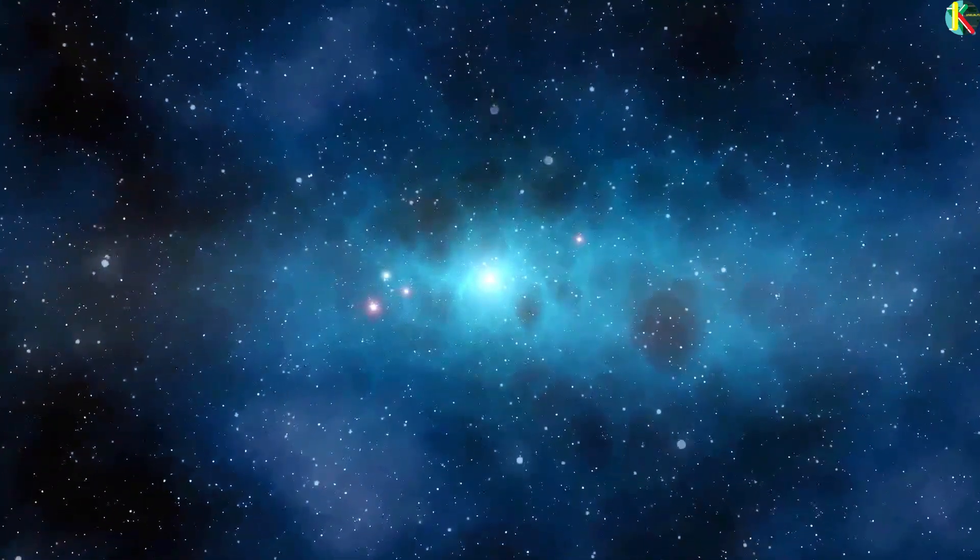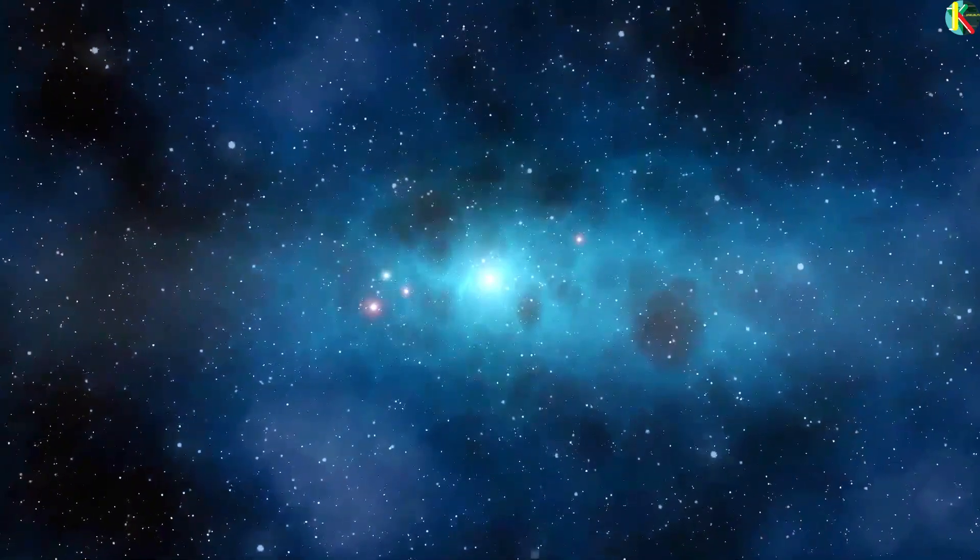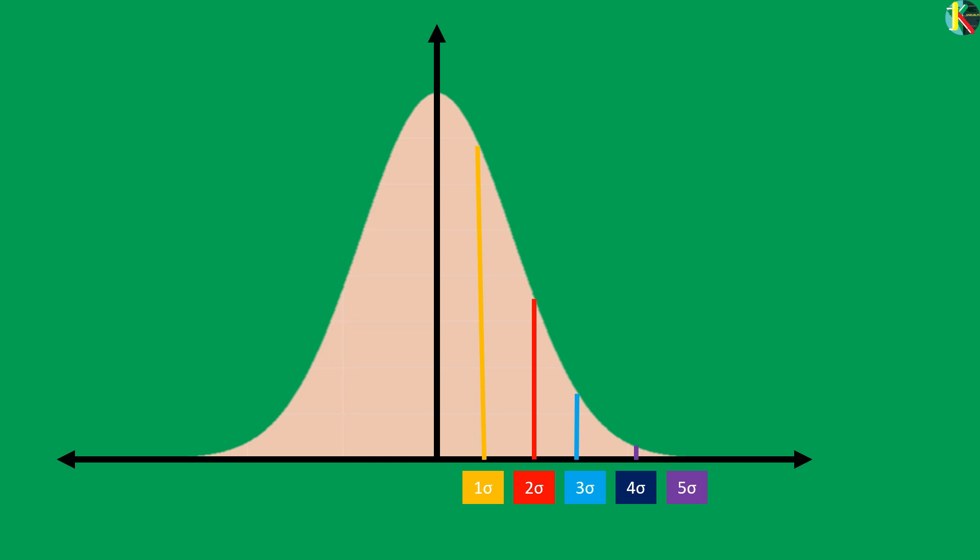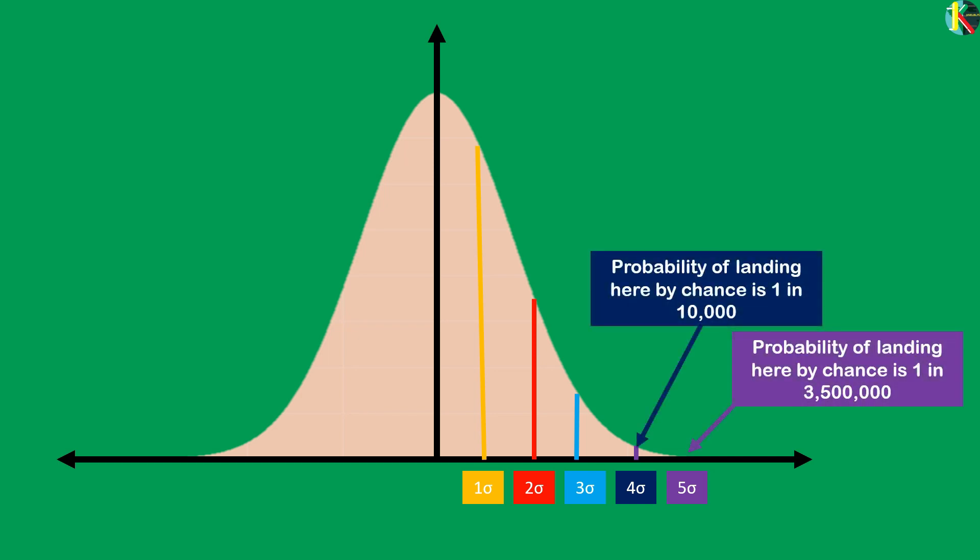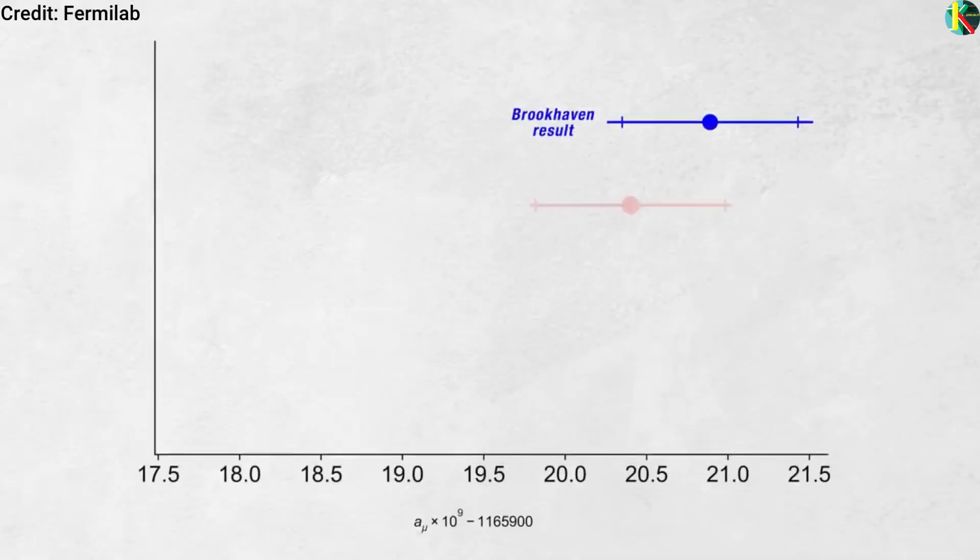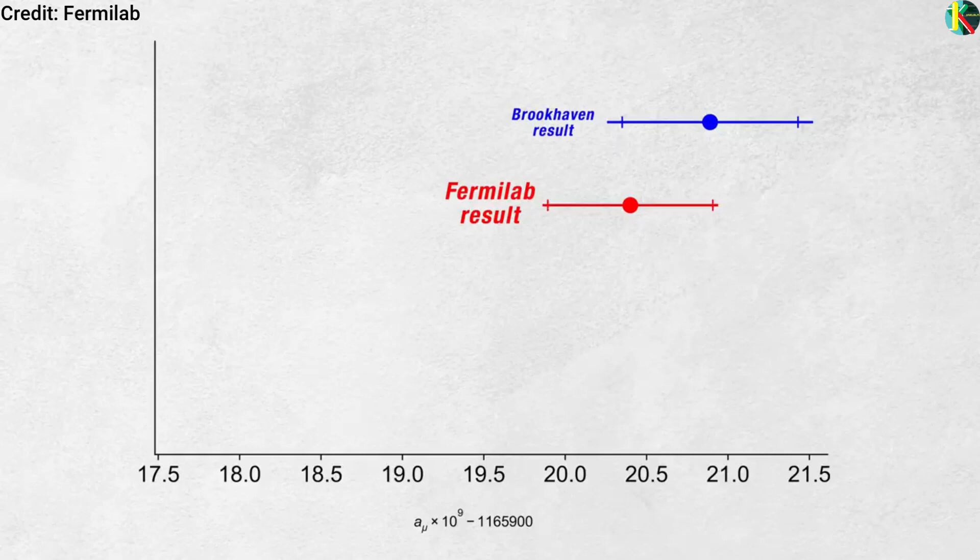But what is the sigma that I have been talking about? To be brief they represent standard deviations. When scientists announce 3 sigma or 4 sigma or 5 sigma results they are talking about the standard deviations from an expected value. The g-2 team announced that their latest result has 4.2 sigma confidence.